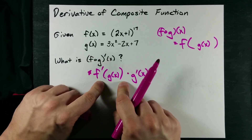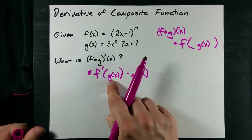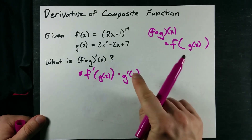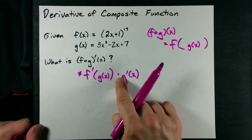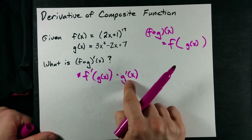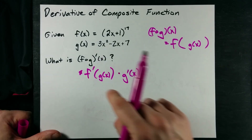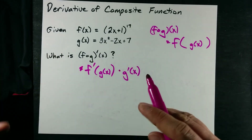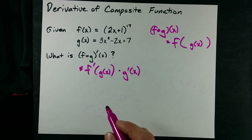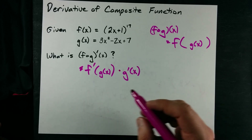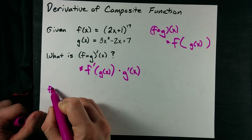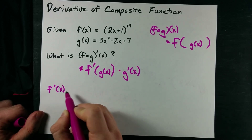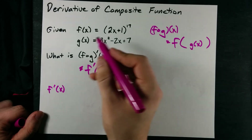That's the exact same thing we're doing here: derivative of what's on the outside, keep the inside the same, and then chain rule — times it by the derivative of what was on the inside. Here's what's awesome: you can simply take the derivative of f separately from g.